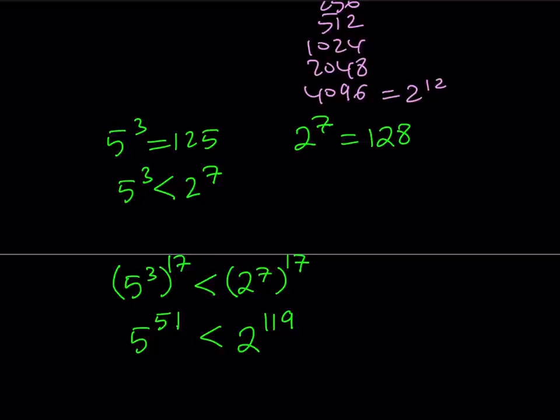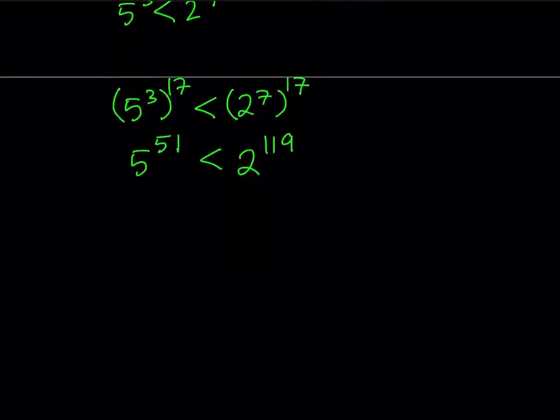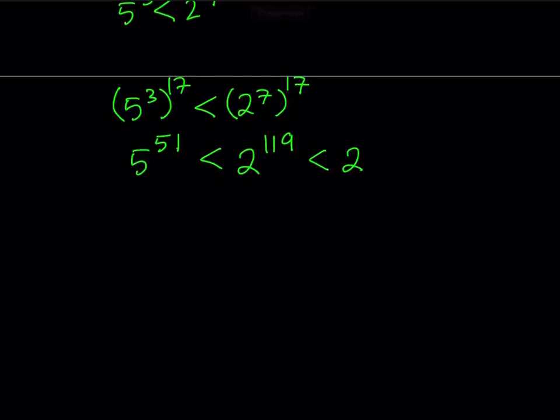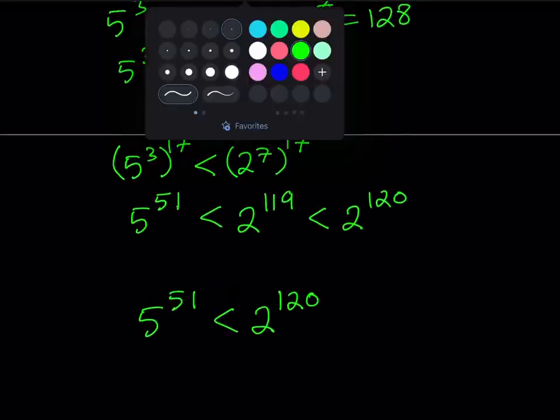Now, I was able to get that 5 to the power of 51 is less than 2 to the power of 119. But in the original problem, remember that I'm supposed to compare 5 to the 51 to 2 to the power of 120, which is 2 times the right-hand side. So, what is that supposed to mean? Well, I can safely say that 2 to the power of 119 is less than 2 to the power of 120 because 119 is less than 120, right? And 2 is greater than 1. So, this is satisfied. Therefore, by using the transitive property of inequalities, I can safely say that 5 to the power of 51 happens to be less than 2 to the power of 120 because it's already less than 2 to the power of 119, which is less than 2 to the power of 120. So, it's obviously less than 2 to the power of 120.